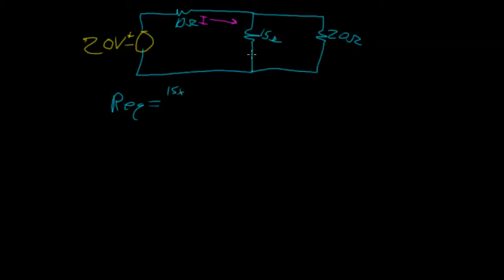In this case, because we have two resistors in parallel, the 15 and the 20, we can use the parallel resistor shortcut to find its equivalent resistance.